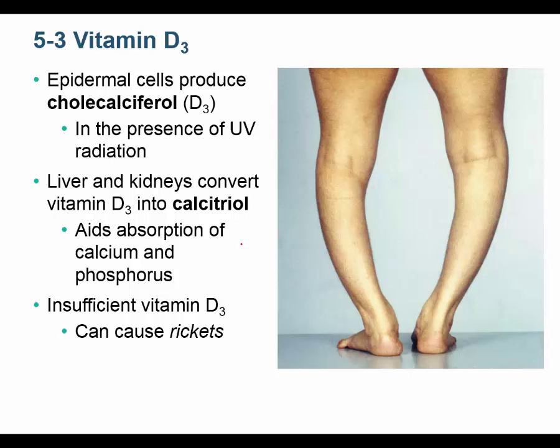Vitamin D synthesis requires three major steps. The first step occurs in the skin, the second step in the liver, and the third step in the kidneys. Vitamin D3 is necessary for calcium absorption — without it, your bones get weak. Insufficient vitamin D causes a disease called rickets. In rickets, bones lose mineral but not protein, leaving mainly a collagenous structure that's flexible, causing legs to bend outward.